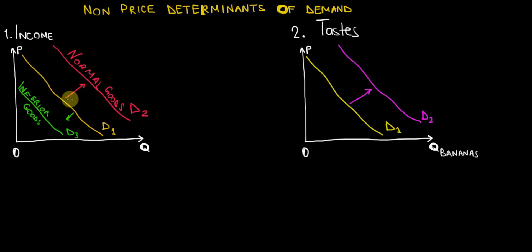However, if we consider inferior goods, we can see that as income rises, the demand for inferior goods shifts to the left, meaning that people demand less inferior goods when they are richer.